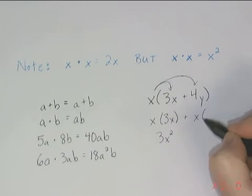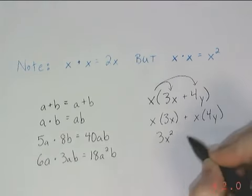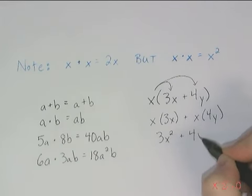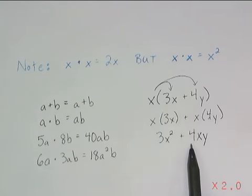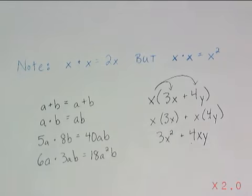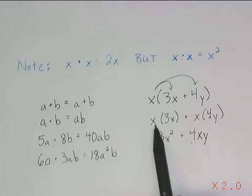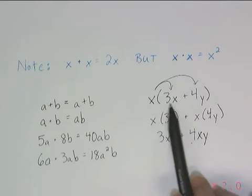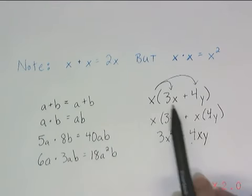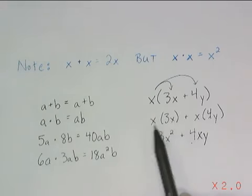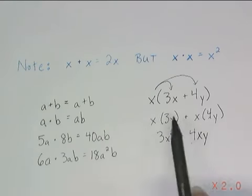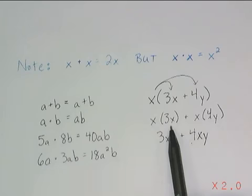x multiplied by 4y gives me 4xy — all I can do is make sure my coefficient is still at the front and write my variables side by side to show the multiplication. But this is the place where some people make errors and they might accidentally try to add these together, or not change the exponent on the x because they confuse the multiplication with combining like terms. Be careful about that.